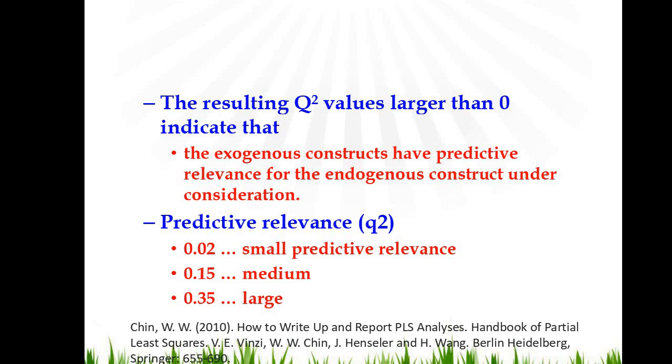So here are some guidelines. If Q-square value is up to 0.02, that means there is small predictive relevance. If it ranges from 0.03 to 0.14, then we say there is medium size predictive relevance. On the other hand, if it is 0.35 or larger than that, then we say there is large size predictive relevance.